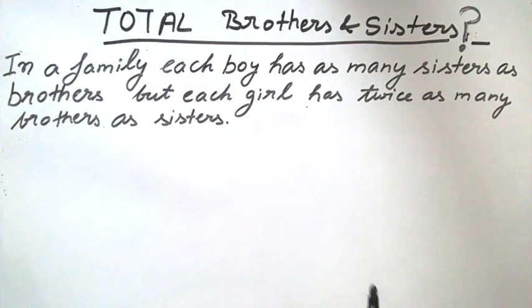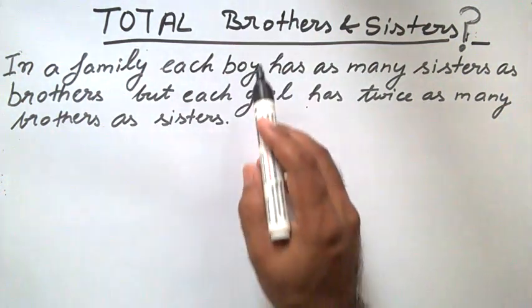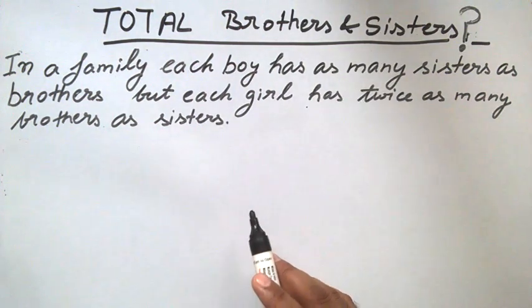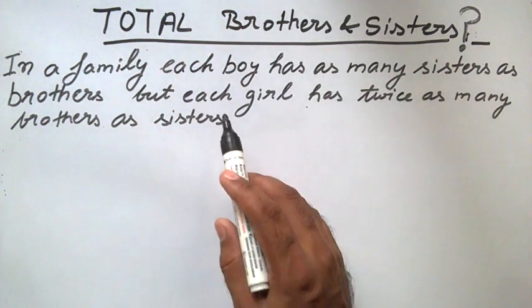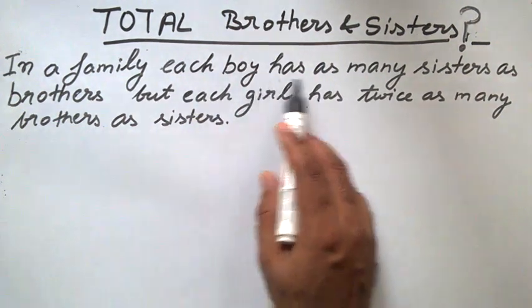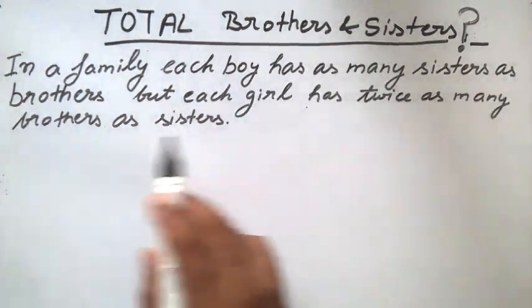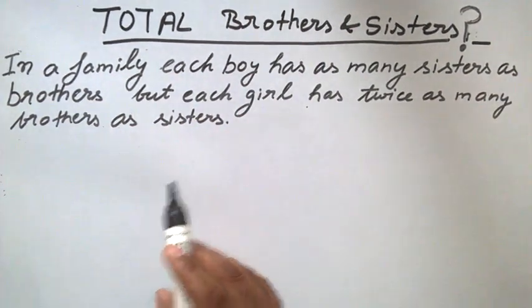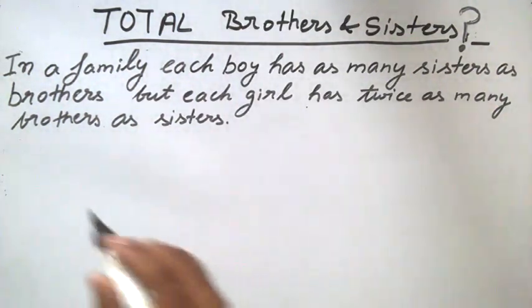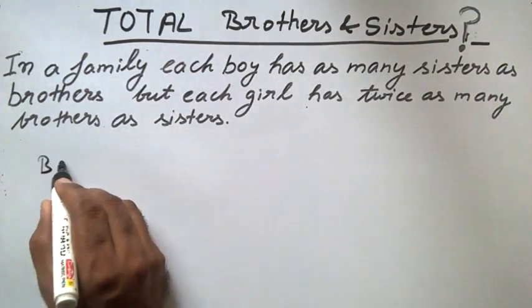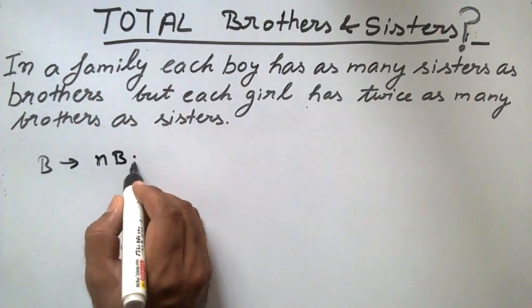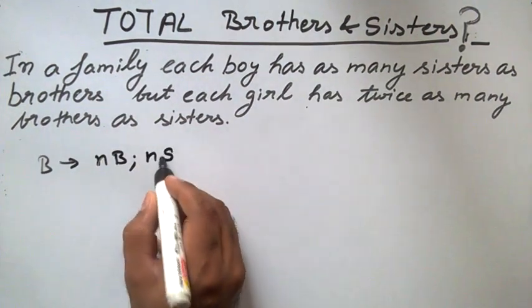In this puzzle, we have to find out the total number of brothers and sisters in a family. For that, there are two conditions. First, each boy has as many sisters as brothers — that is, each boy has an equal number of brothers and sisters. So we write: each boy has n brothers and n sisters.